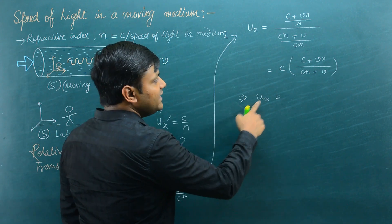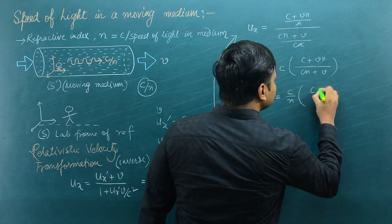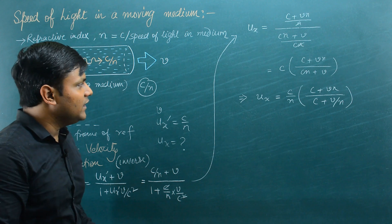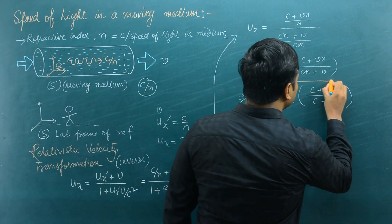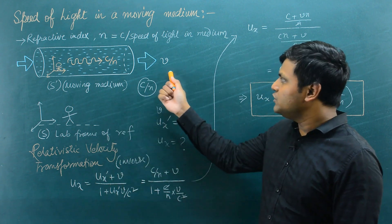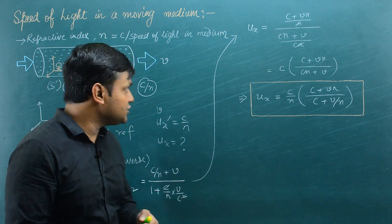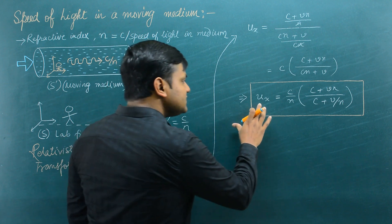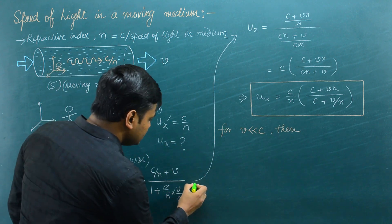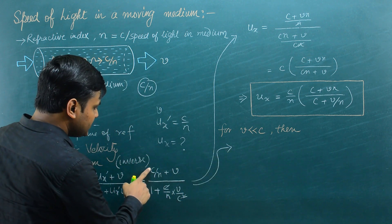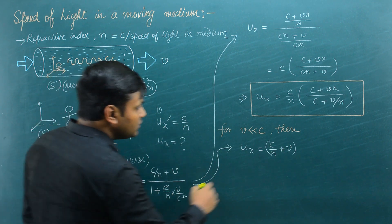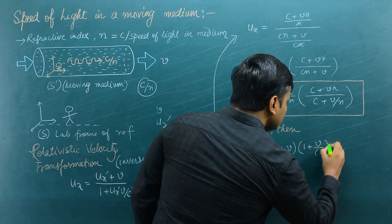We can simplify this expression by taking n outside: ux = (c/n) · (c + vn) / (c + v/n). This is the exact formula for the velocity of the light photon in a moving medium. Now in certain questions they mention that the velocity v of the medium is very very small compared to the speed of light. Under those situations we can further simplify this expression. For v very much less than c, I will use the form ux = (c/n + v) · (1 + v/(cn))⁻¹.